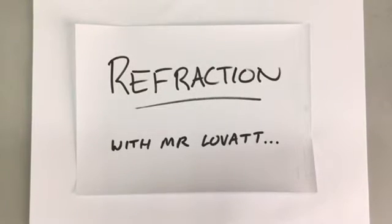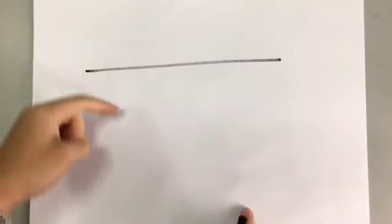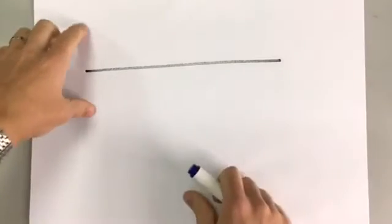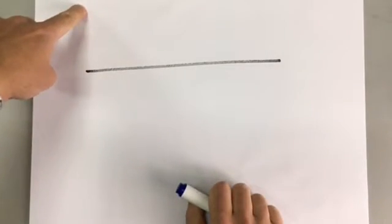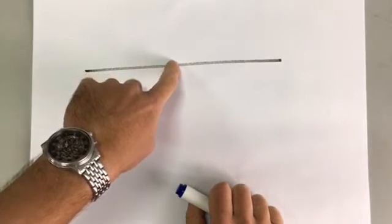This is a GCSE video on refraction of waves. When waves move from one medium to another medium — a medium is a material that it's travelling through — they refract. So when light travels from air into glass, for example, it refracts.